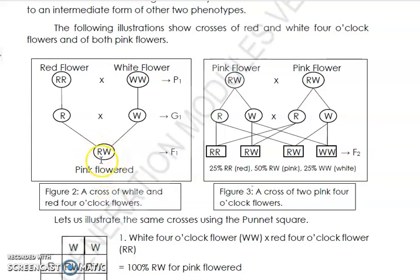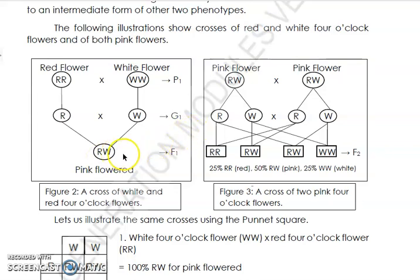So what is the color if the genotype is RW? That should be pink. This means when you combine a red four o'clock flower and a white four o'clock flower, the offspring's color will be pink.